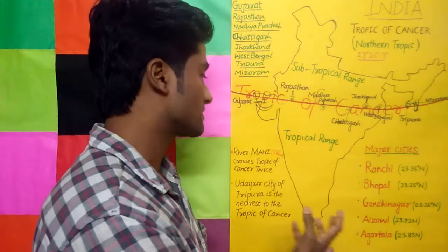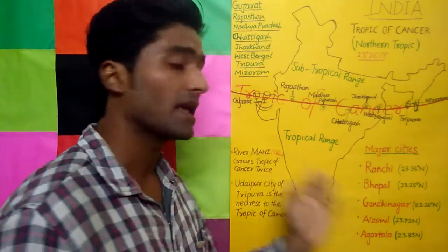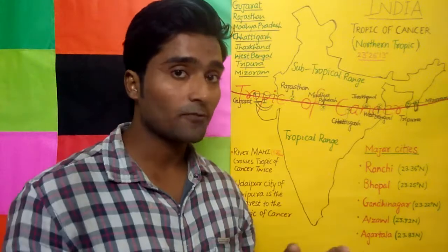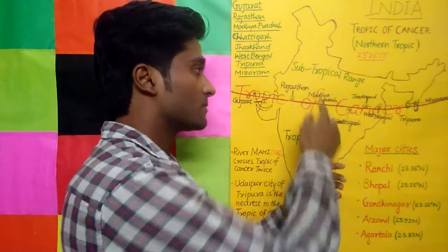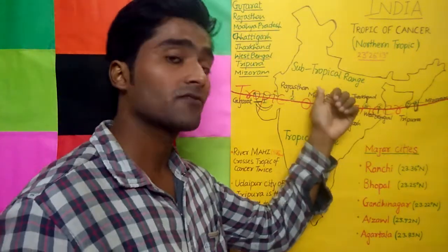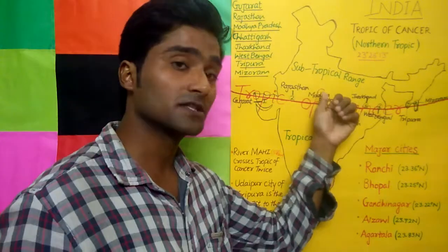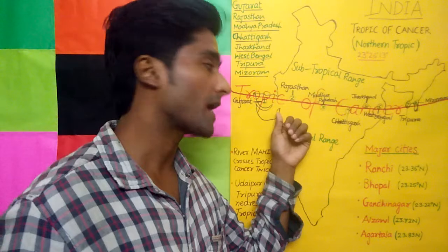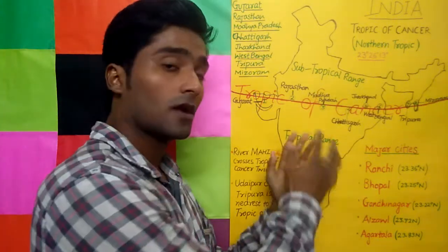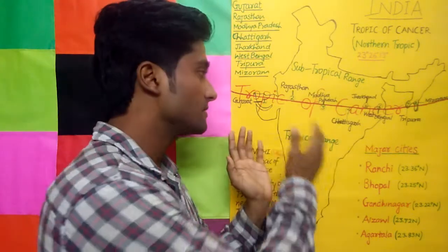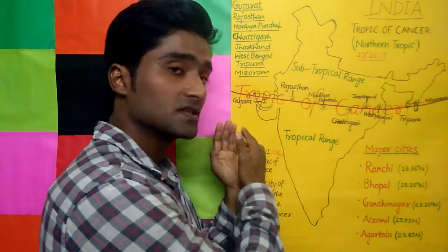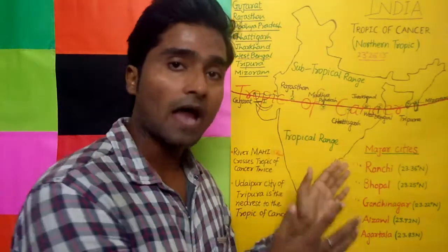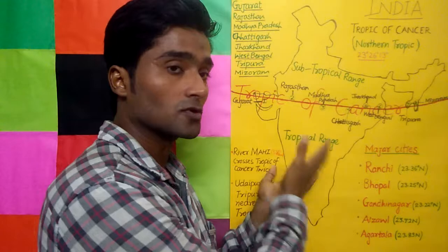One more interesting fact: the Mahi River crosses the Tropic of Cancer twice in Madhya Pradesh. The Mahi River starts flowing from the Vindhya Range of Madhya Pradesh and merges into the Gulf of Khambhat, which is on the Arabian Sea coast, in the Anand district of Gujarat.